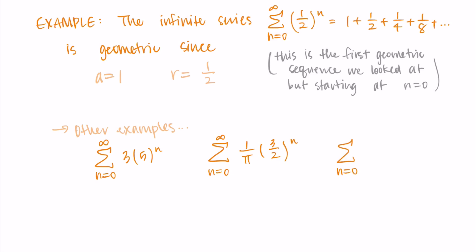And then one last example, sum from n equals 0 to infinity of (-2)^n. So r can be negative, a could also be negative, but a here in this example is just 1. So really anything in the form ar^n with a sum from n equals 0 to infinity counts as a geometric series.